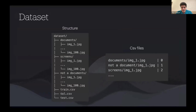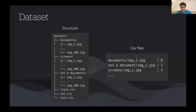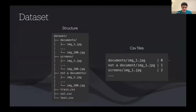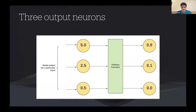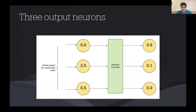You have three folders with images and three CSV files. The structure is simple: the first column is the relative path to the image and the second column is the class ID. The first approach that comes to mind is to just use three output neurons and a softmax in your classification model. In this case, as a prediction you get one class: either it's a document, a screen, or not a document.